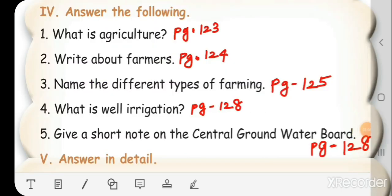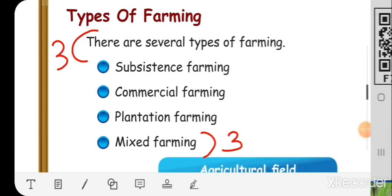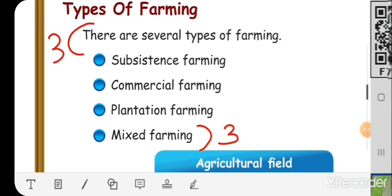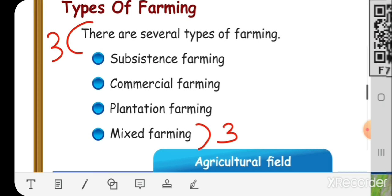Third question: Name the different types of farming. This answer is on page number 125. Types of farming: there are several types of farming - subsistence farming, commercial farming, plantation farming, and mixed farming.